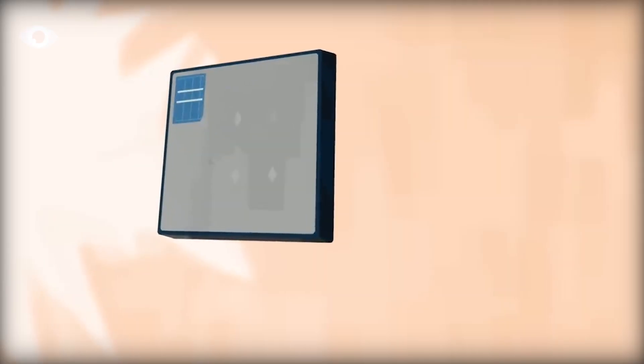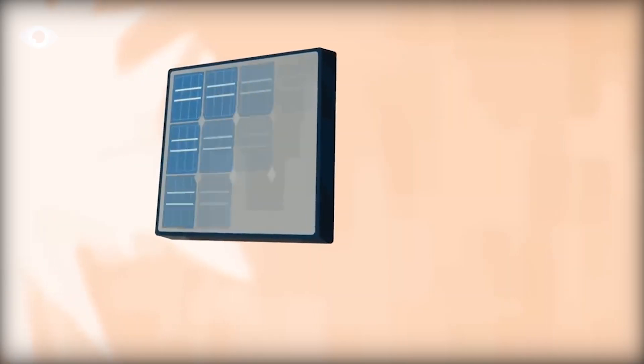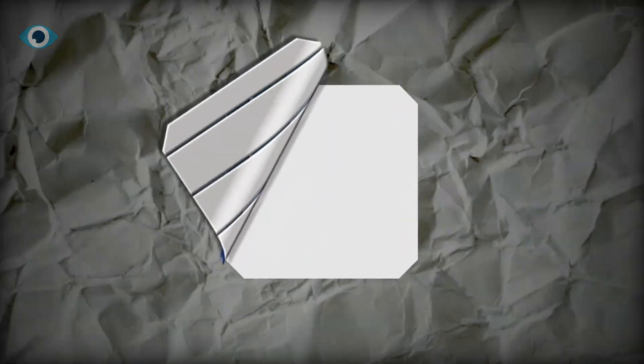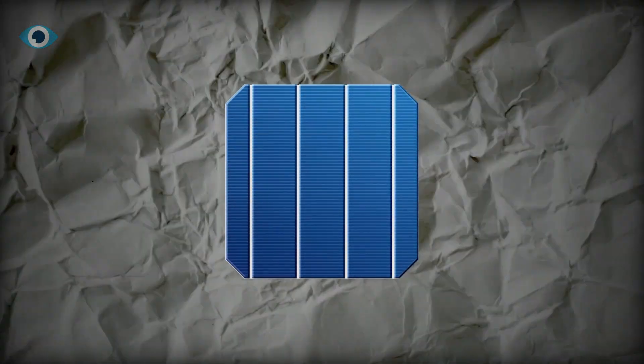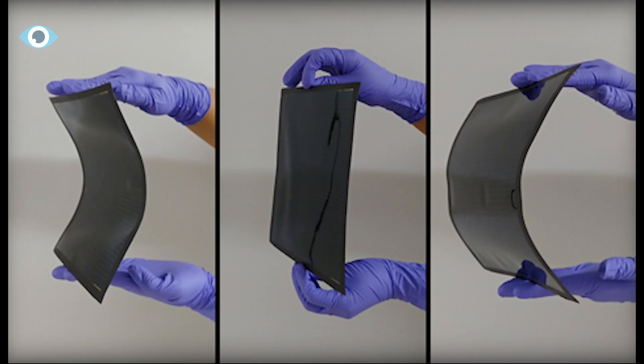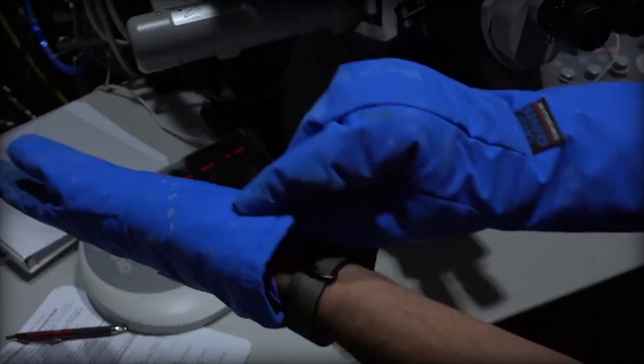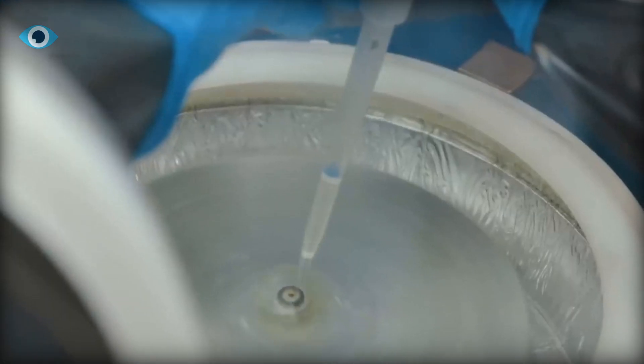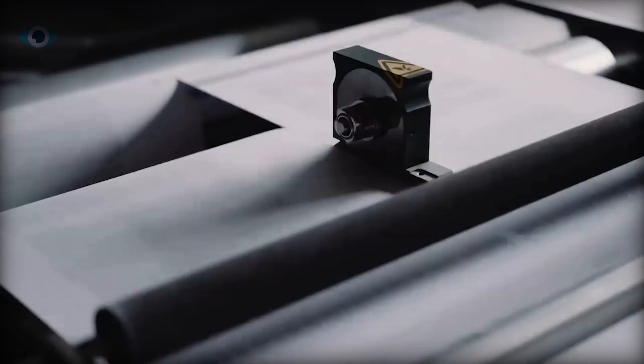Perovskite can be applied in various ways to enhance the performance and efficiency of solar panels. It can be deposited as a thin film onto different substrates, such as glass or flexible materials like plastics. This process, known as thin film deposition, typically involves techniques like spin coating, vapor deposition, or inkjet printing—a process similar to how newspapers are printed.